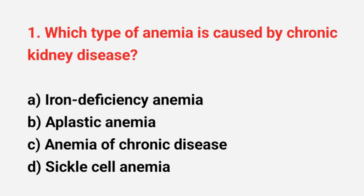Question number 1: which type of anemia is caused by chronic kidney disease? The right answer is option C, anemia of chronic disease.